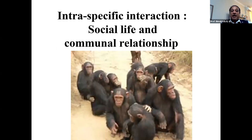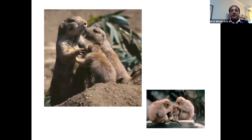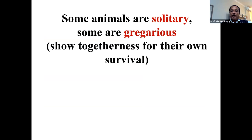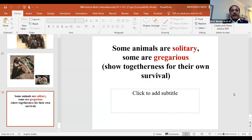Interspecific interaction, social life, and community relationships: there are different types of communal behavior. Communal behavior here comes from the ecological sense of community and should not be confused with other dictionary meanings of the word. This is an ecological term. Some animals are solitary, while some are gregarious — they show togetherness for their own survival. Thank you very much.